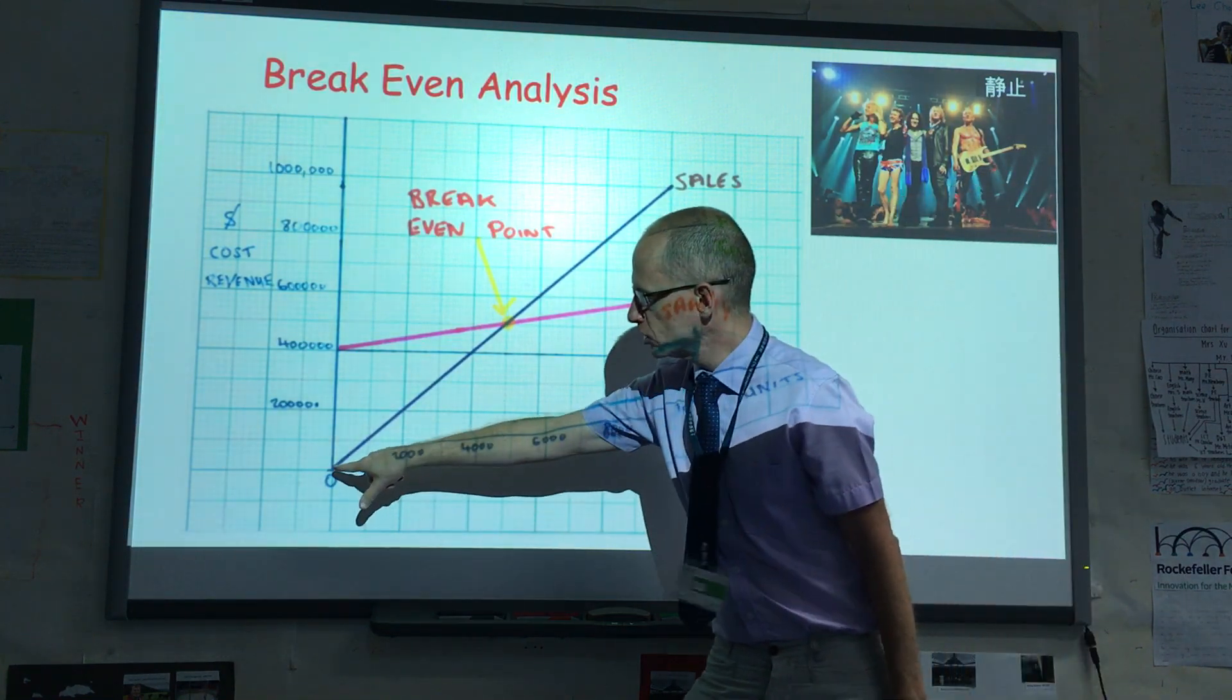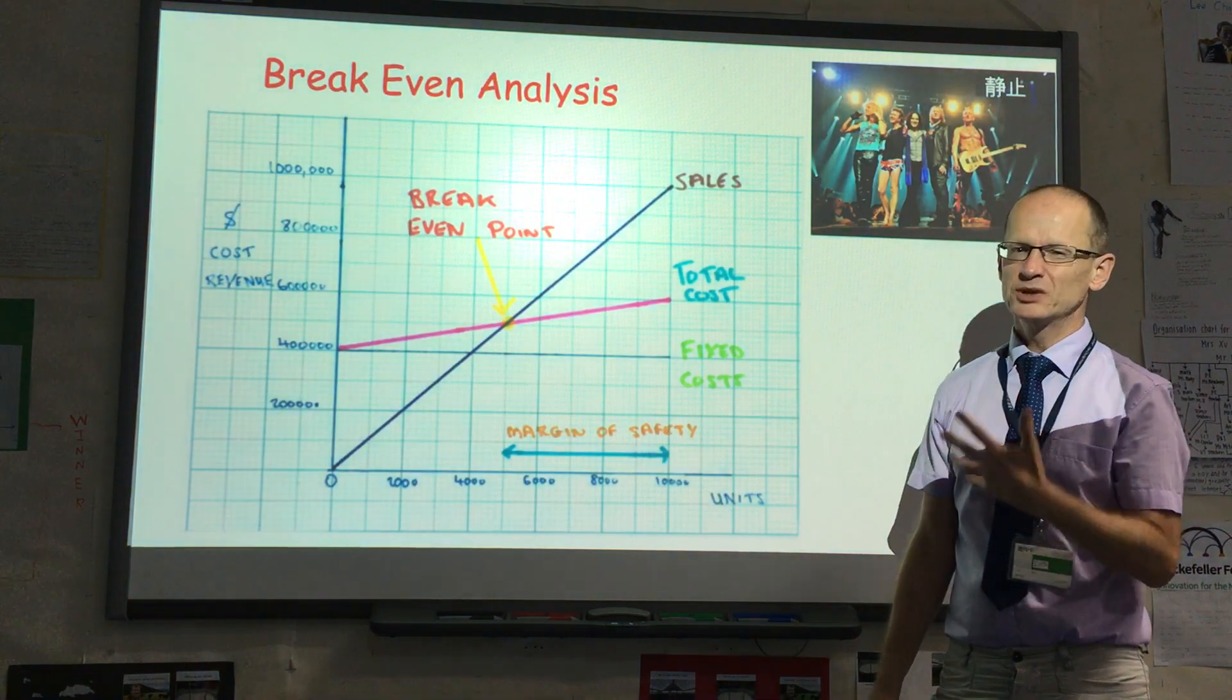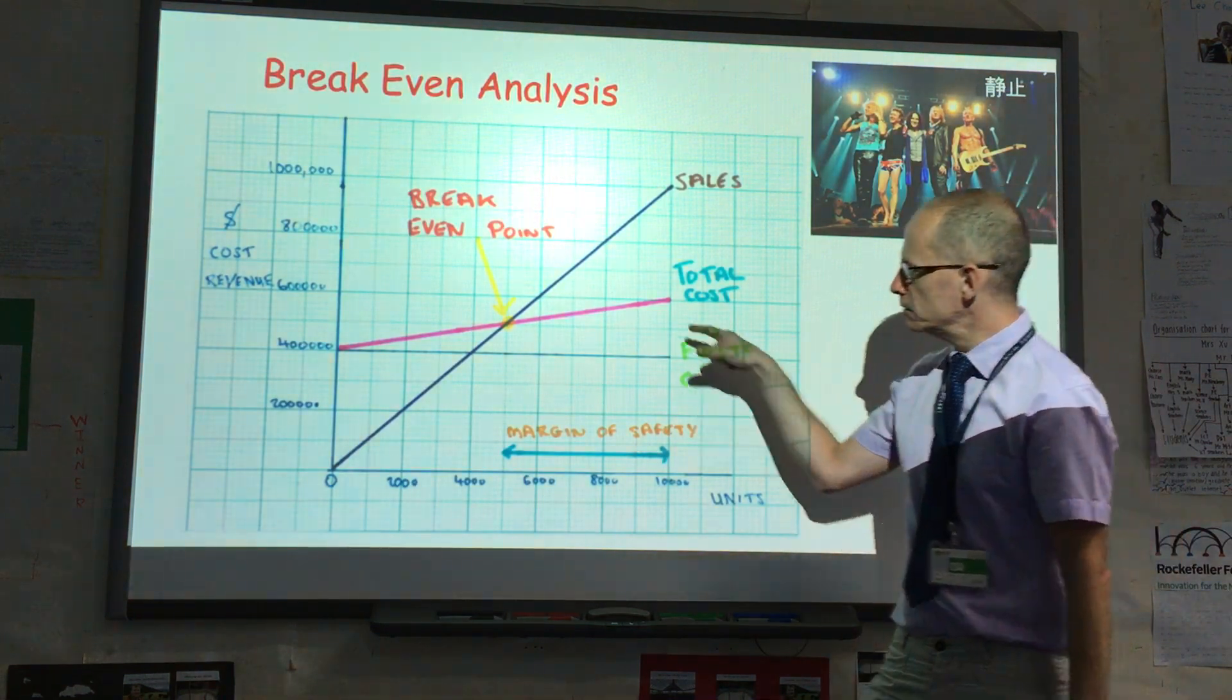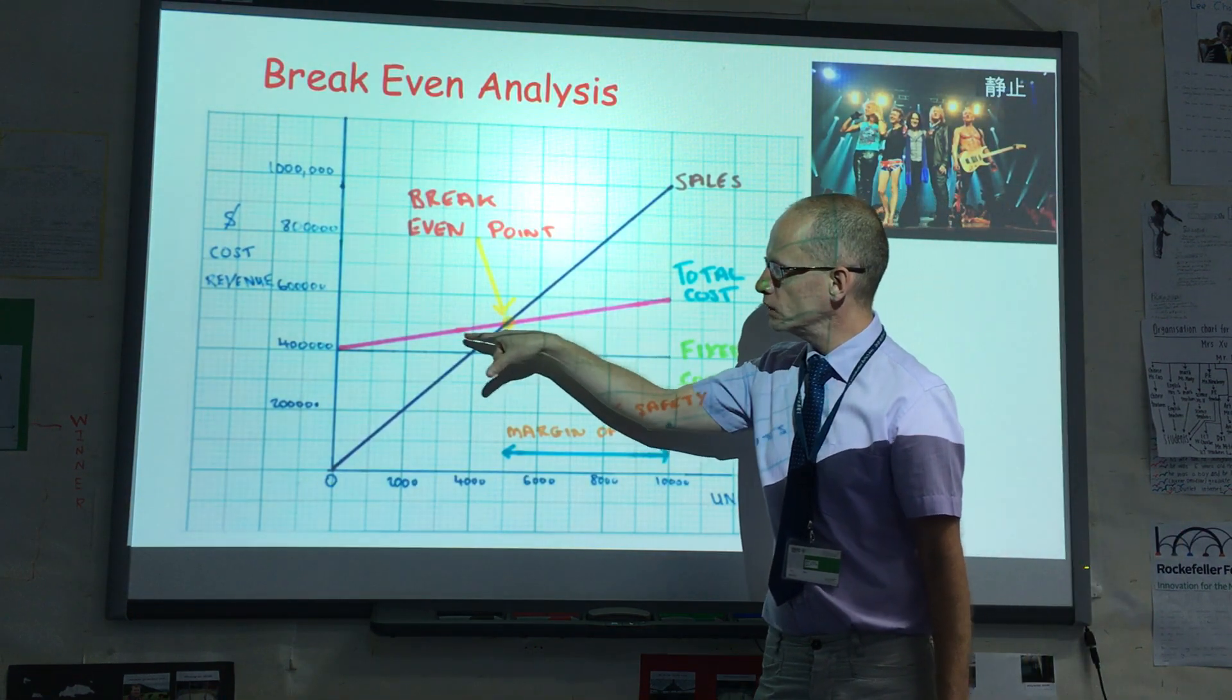Now, I don't draw a variable cost line going from here to here. That's because that's an extra line and it would be confusing, because the variable cost is already shown here.